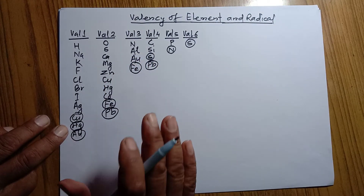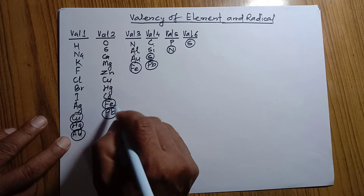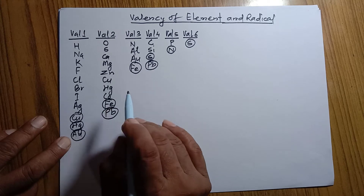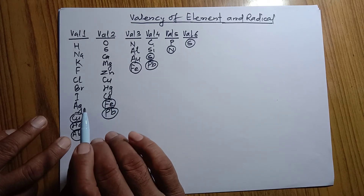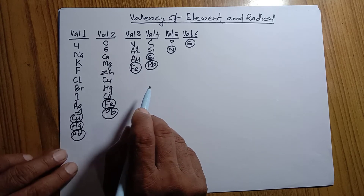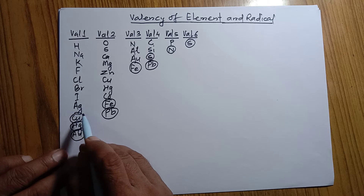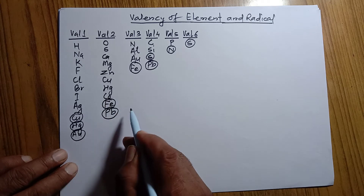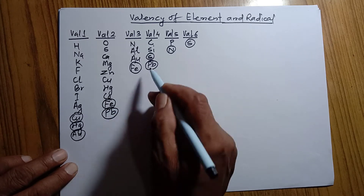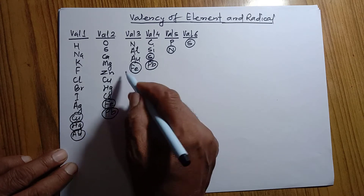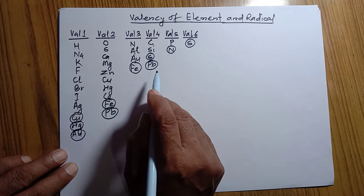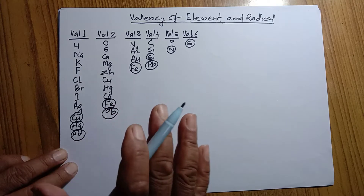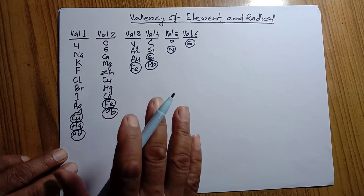Now this we must remember. But have you noticed? I have marked some of the elements differently — they are encircled. Why are they encircled? Because some of the elements have variable valency. For example, copper's valency is sometimes 1, sometimes 2. In the same way, mercury has also valency 1 and 2. Lead's valency is sometimes 2, sometimes 4. So there is variable valency — sometimes different. This variable valency we have to remember.